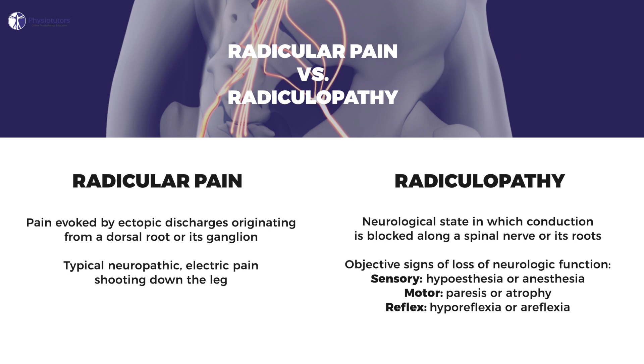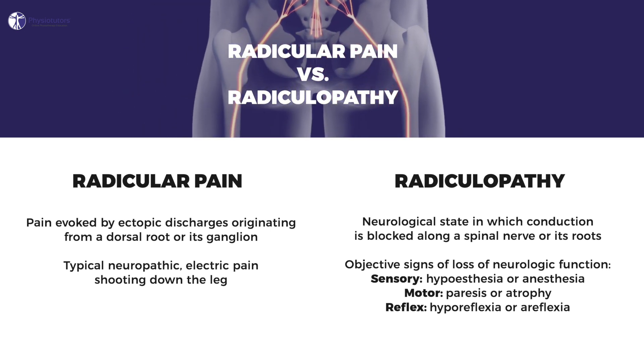First of all, let's distinguish between radicular pain and radiculopathy. Even though radicular pain and radiculopathy are synonymously used in the literature, they are not the same. Radicular pain is defined as pain evoked by ectopic discharges originating from a dorsal root or its ganglion. It's the neuropathic electric pain that patients feel shooting down the leg.